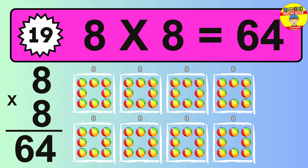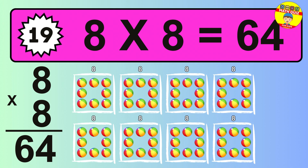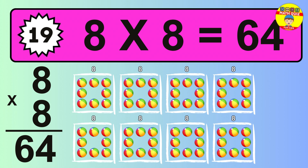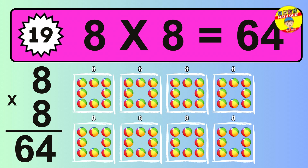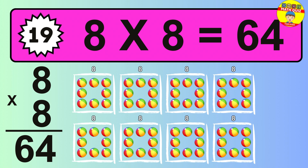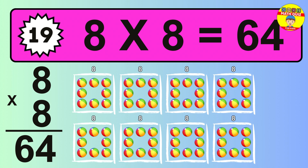Question 19. Eight times eight equals what? The answer is eight times eight is sixty-four. To calculate, we have eight groups with eight balls each one. So how many balls do we have? Sixty-four balls.